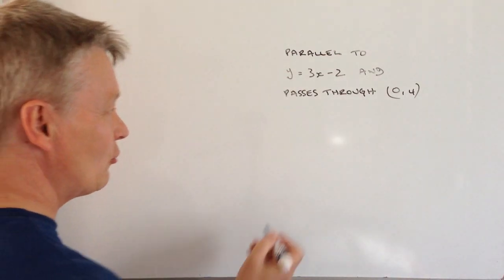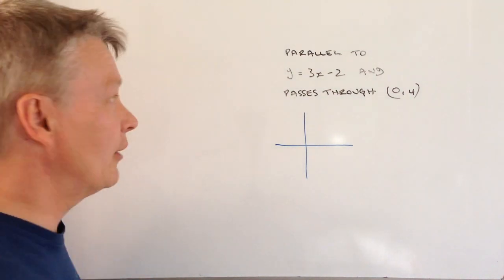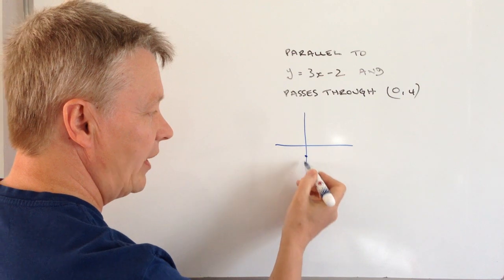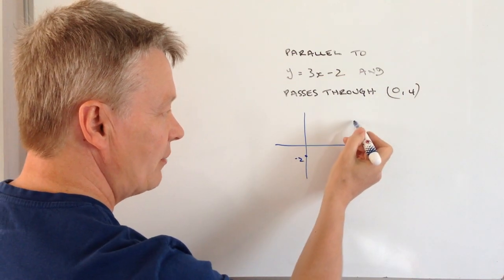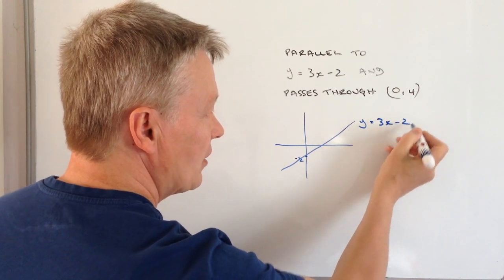If we look at that on a graph, you wouldn't need to do this in the question but it's useful to be aware of it. The original line passes through the y-intercept at minus 2, so it will look something like that: y equals 3x minus 2.